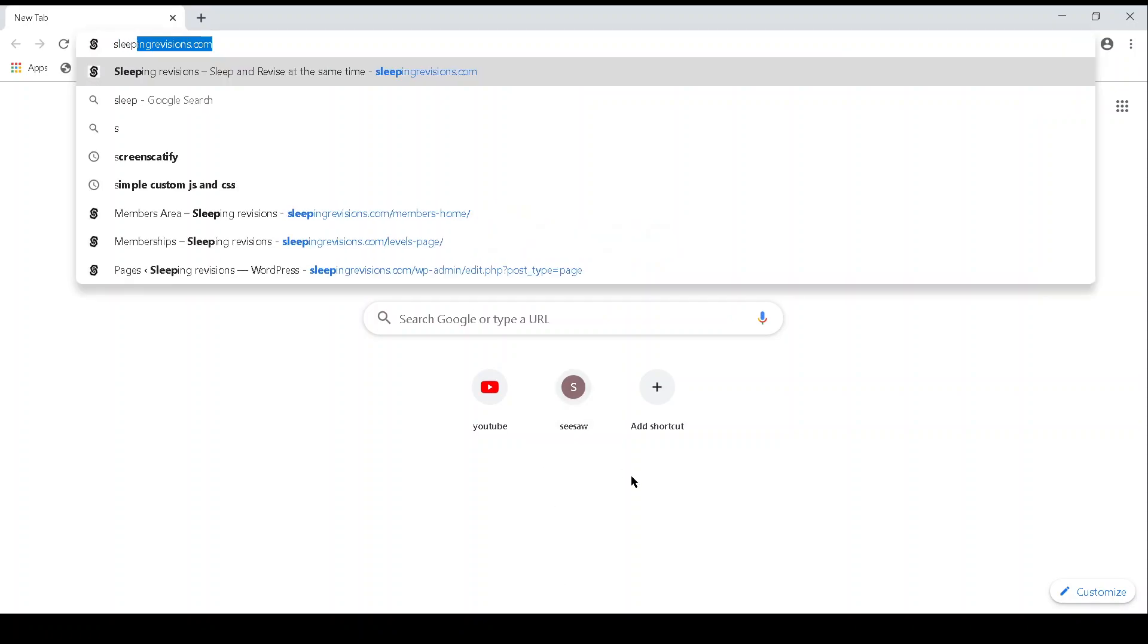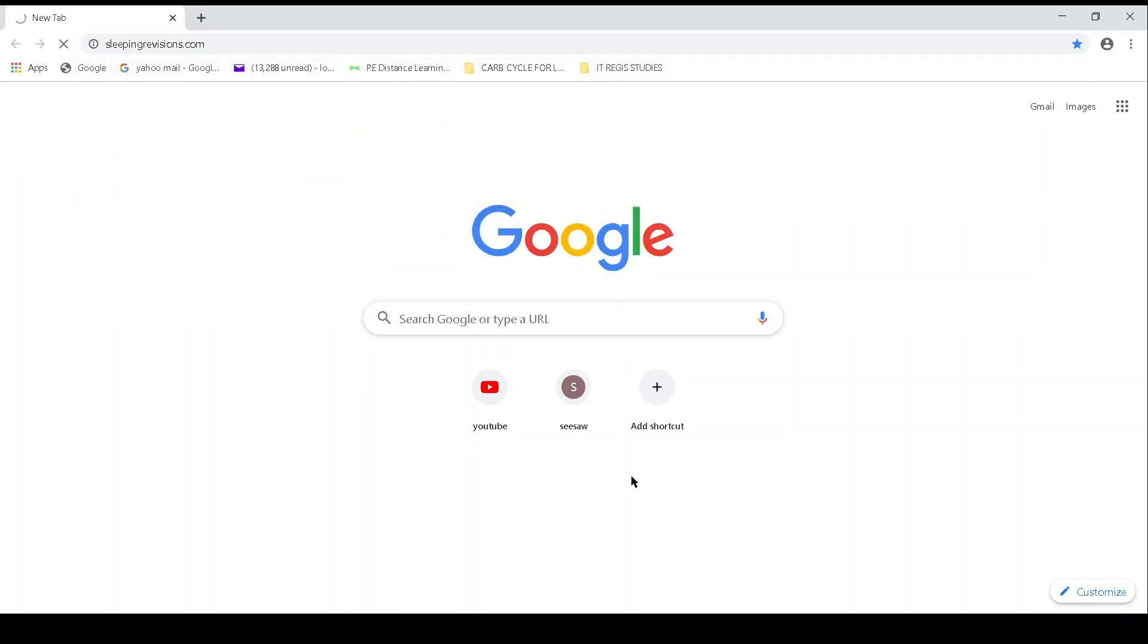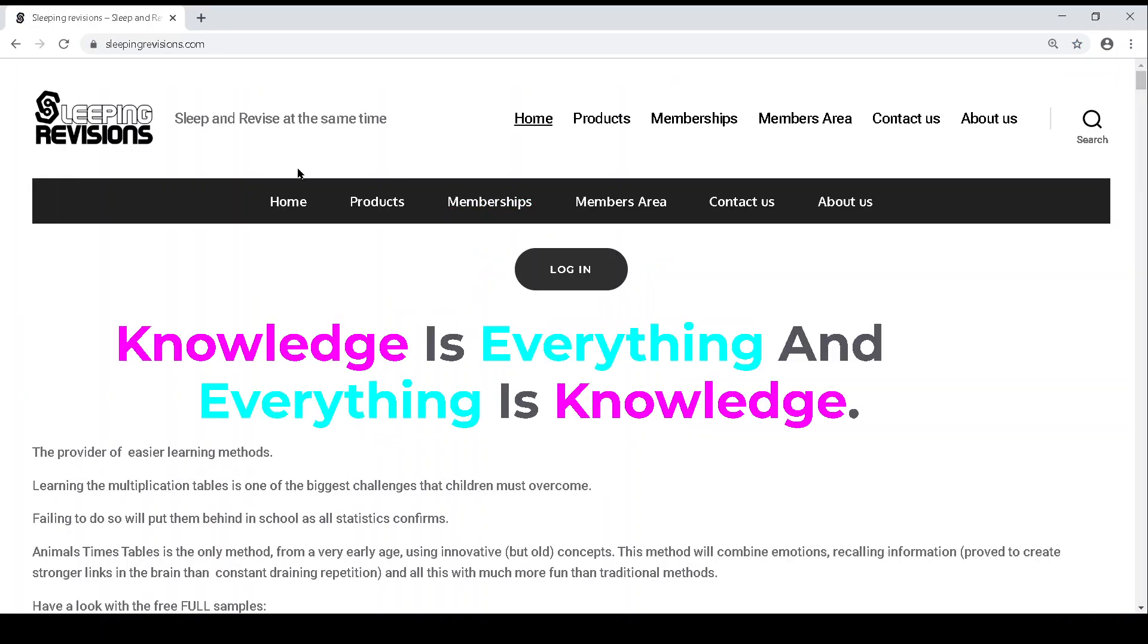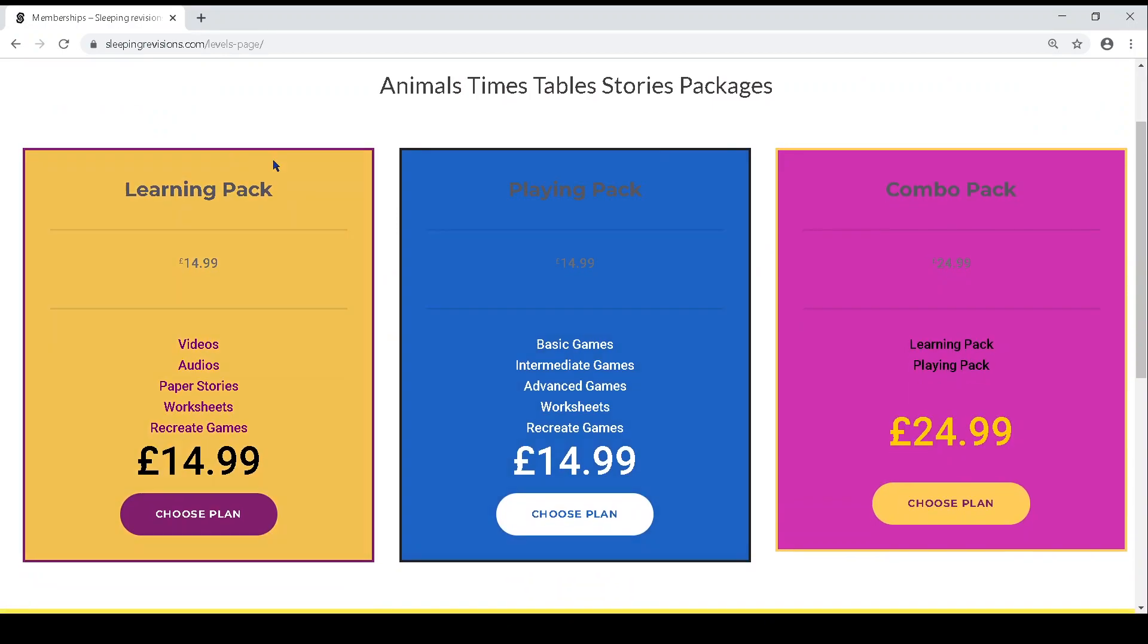Once you're in there, you type Sleeping Revisions and you come to the front page. You can go into Product Membership. Once you've selected a membership, depending on your selection between a Learning Pack, Playing Pack, or Combo Pack.